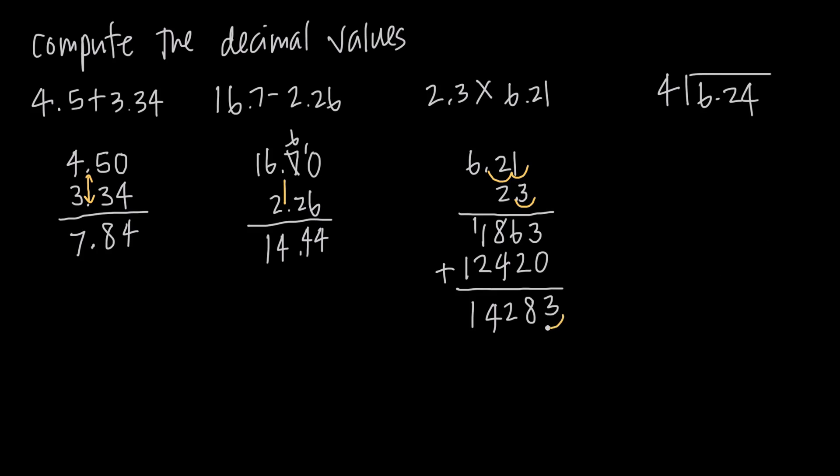So we count over in our final answer 1, 2, 3. And we put the decimal point right here. So then our final answer becomes 14.283.